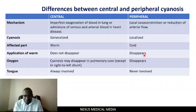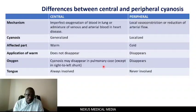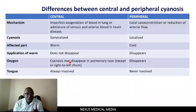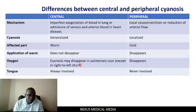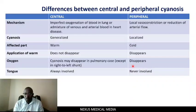With oxygen therapy: in central cyanosis, the cyanosis may disappear in pulmonary cases, except in right-to-left shunts where it does not resolve. In peripheral cyanosis, the cyanosis will disappear upon giving oxygen.